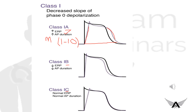Class 1b drugs have a relatively weak effect at blocking sodium channels, but their effect is most prominent in already depolarized tissues, as seen in ischemia. They take less than 1 second, so these drugs help in the setting of angina or acute MI. Class 1b drugs slightly decrease the action potential duration and effective refractory period. Examples are lidocaine and mexiletine.